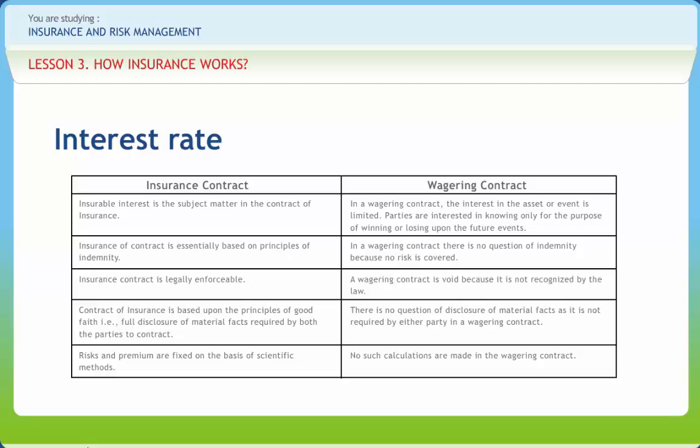In a wagering contract, the interest in the asset or event is limited. Parties are interested in knowing only for the purpose of winning or losing upon the future events. In a wagering contract, there is no question of indemnity because no risk is covered. A wagering contract is void because it is not recognized by the law. Therefore, there is no question of disclosure of material facts, as it is not required by either party in a wagering contract, and no such calculations are made in the wagering contract.